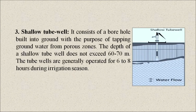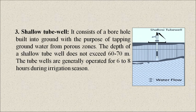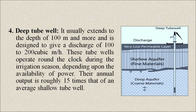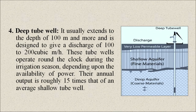The third method is the shallow tube well, which consists of a borehole built into the ground with the purpose of tapping groundwater from porous zones. The depth of a shallow tube well does not exceed 60 to 70 meters, and these tube wells are generally operated for 6 to 8 hours during the irrigation season. Next is the deep tube well, which usually extends to a depth of 100 meters or more and is designed to give a discharge of 100 to 200 cubic meters per hour. These tube wells operate round the clock during the irrigation season, and their annual output is roughly 15 times that of an average shallow tube well.